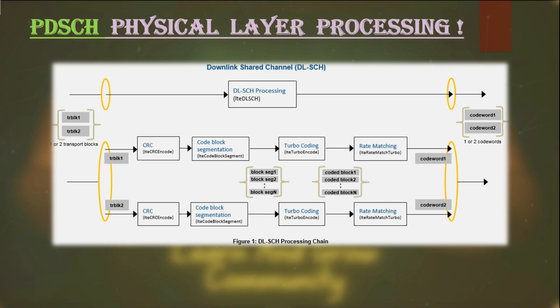Now let's talk about the physical shared channel in the downlink, which is PDSCH. PDSCH mainly carries user information in the downlink. This user data gets transferred in terms of transport blocks, or TBs, also called the data payload. The information comes from upper layers like the MAC layer. When these transport blocks come down to the lower layers, some mandatory actions are followed — for example, CRC, also called Cyclic Redundancy Check, is added first.